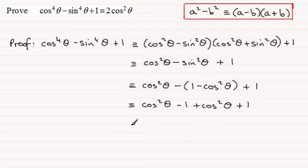And what do we get? Well the ones cancel one another out here. We're left with cos squared theta plus cos squared theta which is the same as 2 cos squared theta. What we had to prove.